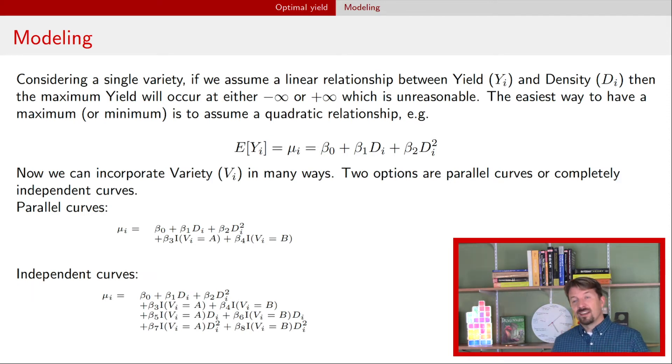Alright so in those last two approaches the parallel curves model looks like the equation right here. We have that line for density but we also have a line for variety that just has the effect of shifting that curve for density up and down. If we have independent curves then we have to add two more lines - those additional lines are the interaction between the variety and the linear term for density as well as variety and that quadratic term for density.